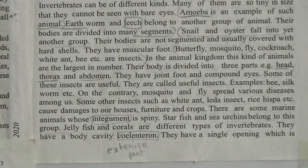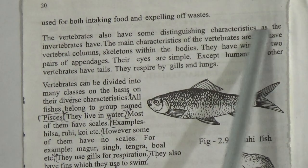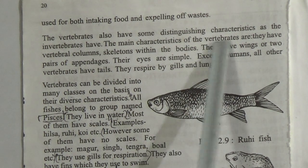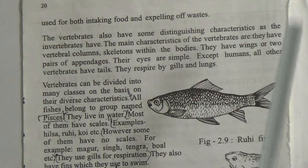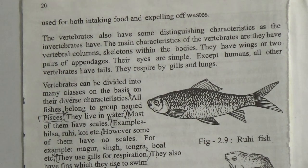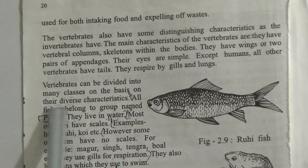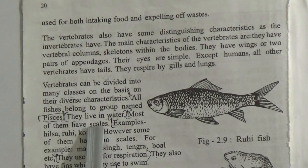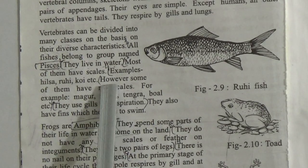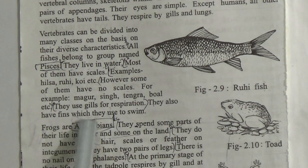This is page number 20. The main characteristics of vertebrates are: they have vertebral columns and skeletons within their bodies, they have two pairs of appendages or wings, their eyes are simple, and except for humans all other vertebrates have tails. They respire by gills and lungs. Vertebrates can be divided into many classes. All fishes belong to the group named Pisces. They live in water; most have scales — examples: hilsha, rui, koi — while some have no scales — examples: magur, shing, tangra, boal. They use gills for respiration and have fins for swimming.